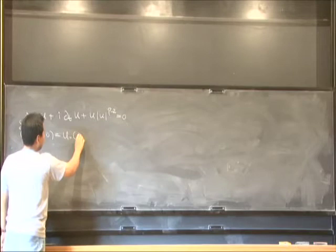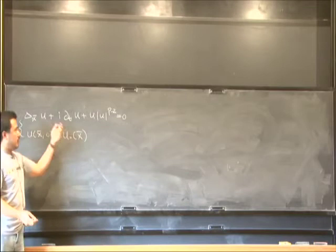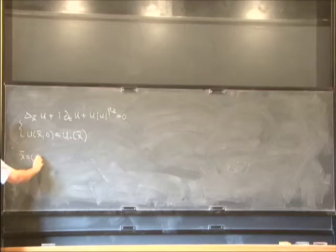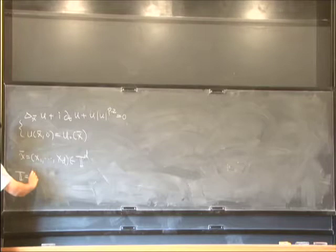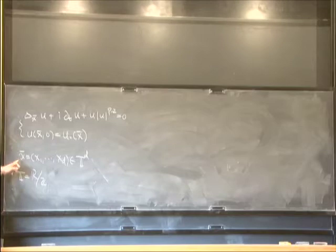This is a classical Schrödinger equation, where x bar is x1 to xd in T^d. T is a torus, defined by R over Z. You can say that the space variable is periodic, or it's [0,1].